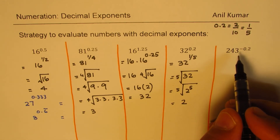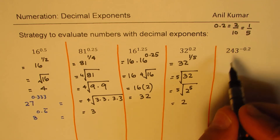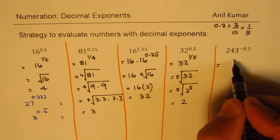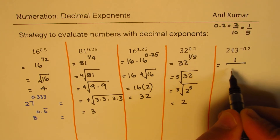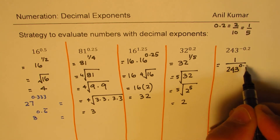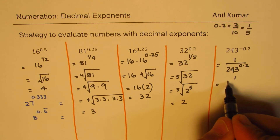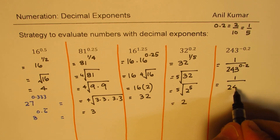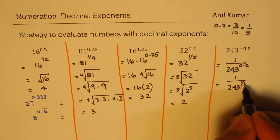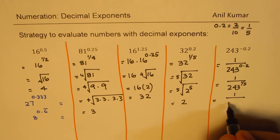Now we have 243 but the exponent is negative. Negative really means reciprocal, so it is 1 over 243 to the power of 0.2. 0.2 is one fifth, so we are finding the fifth root of 243.